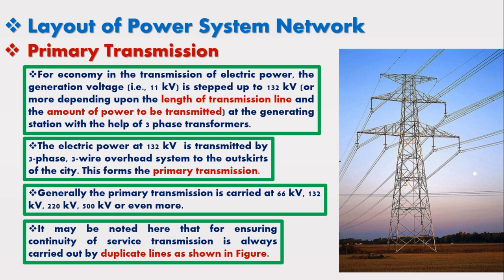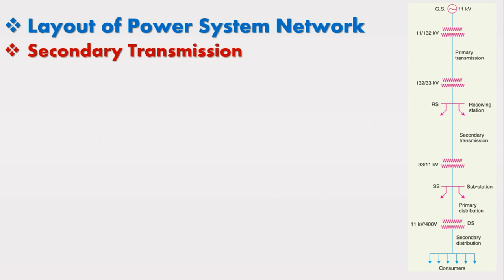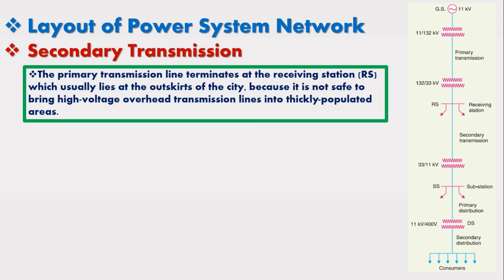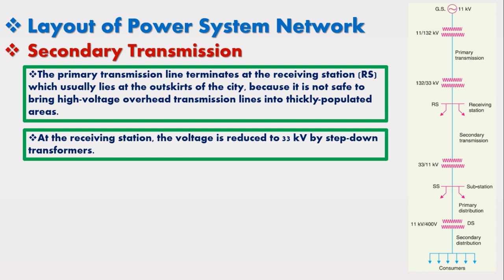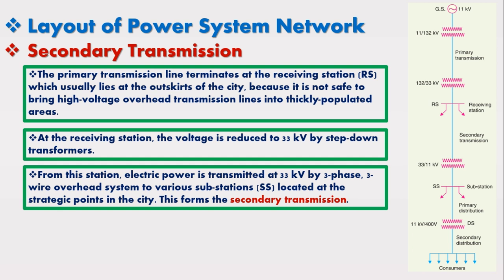The primary transmission line terminates at the receiving station, which usually lies at the outskirts of the city, because it is not safe to bring high-voltage overhead transmission lines into thickly populated areas. At the receiving station, the voltage is reduced to 33 kV by step-down transformers. From this station, electric power is transmitted at 33 kV by a three-phase, three-wire overhead system to various substations located at strategic points in the city. This forms the secondary transmission.